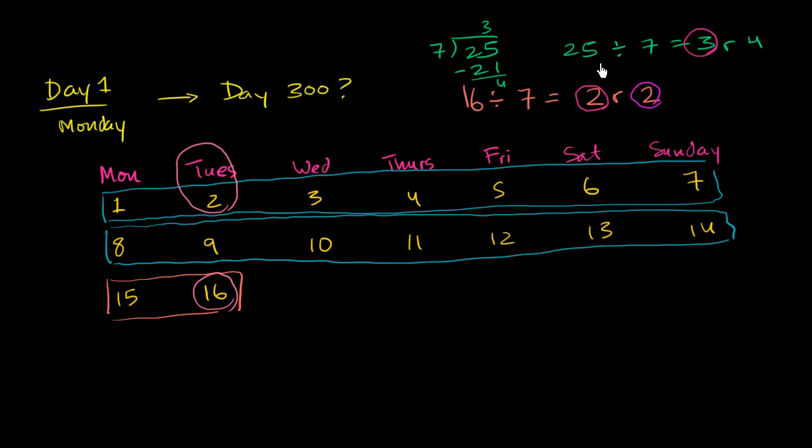Based on this, if we were to write out the grid, we should have three rows of 7 before we get to 25. And then 25 should sit in the fourth column. So if it's in the fourth column, it should be a Thursday. Day 25 should be a Thursday. Let's see if that actually works out.